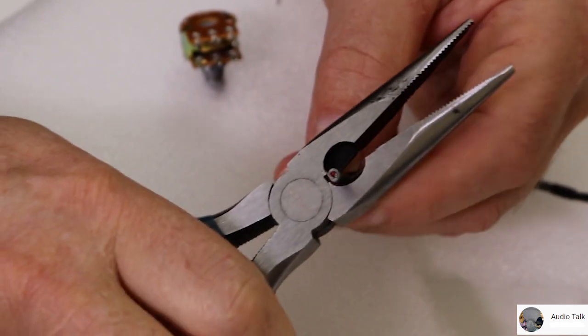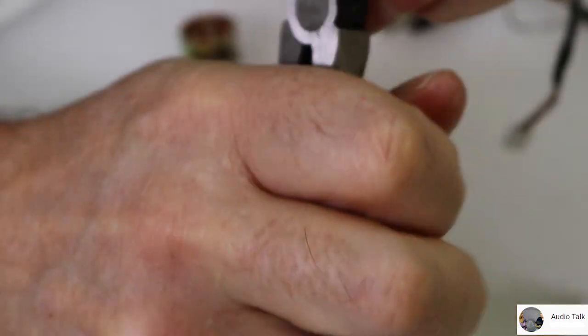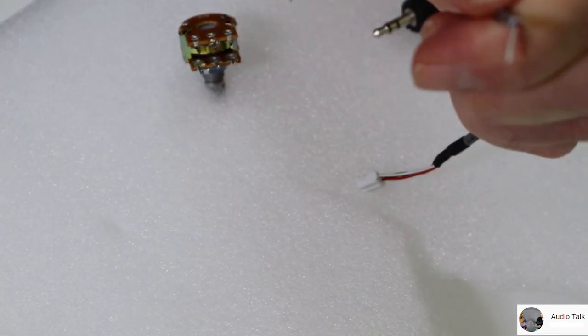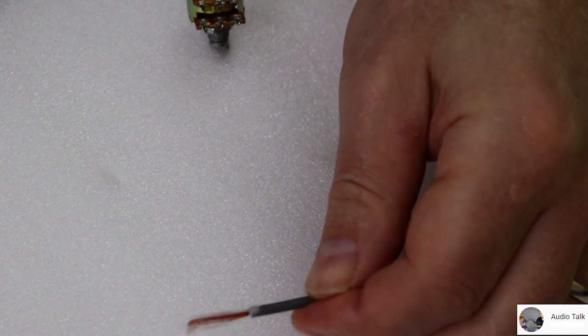So we need to remove the insulation. Here's first the JST connector that's going to go to the amplifier. And make sure not to hurt the insulation on the two plus lines going inside.